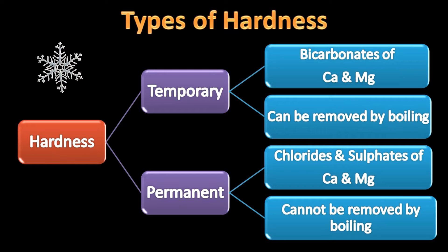Temporary hardness can be easily removed by boiling, whereas permanent hardness is caused by chlorides and sulfates of calcium and magnesium, which cannot be removed by boiling. Now we are going to discuss about temporary hardness and its removal.